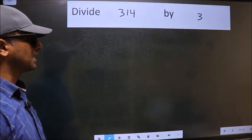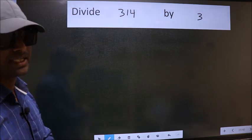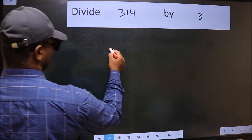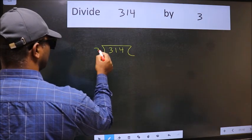Divide 314 by 3. To do this division, we should frame it in this way: 314 and 3 here.